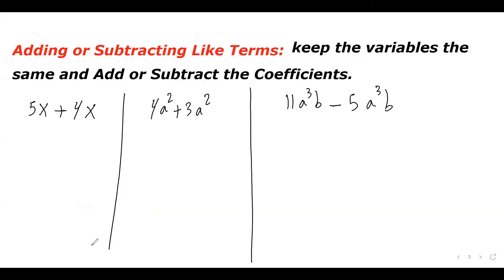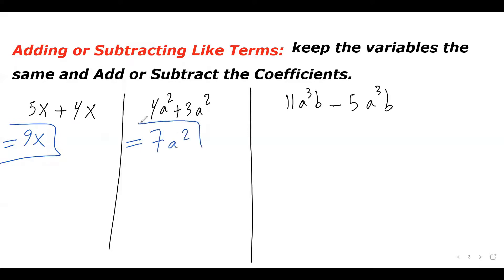Adding or subtracting like terms: when we add or subtract like terms, we keep the variables the same and add or subtract the coefficients. For example, 5x plus 4x — these are like terms, so 5 plus 4 is 9, giving us 9x. How about 4a squared plus 3a squared? We keep the variable the same and add the coefficients: 4 plus 3 is 7, so the answer is 7a squared.